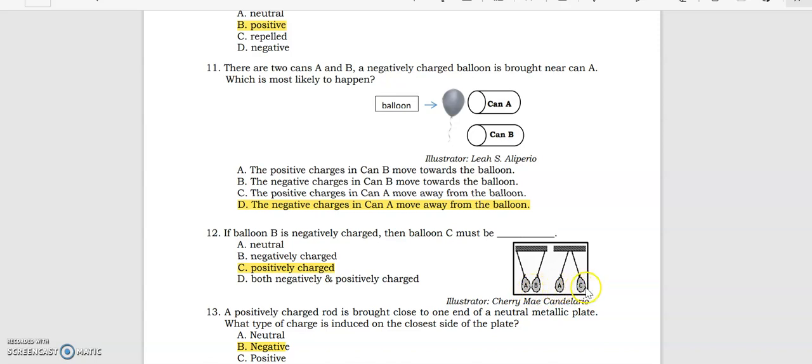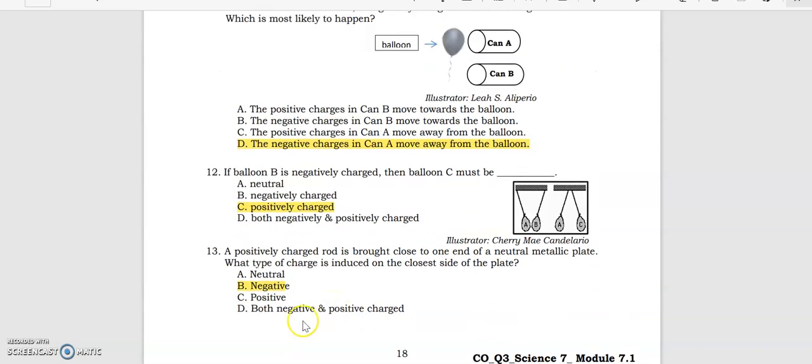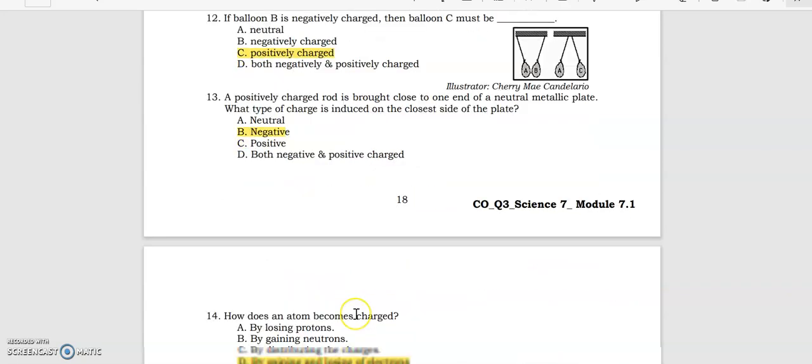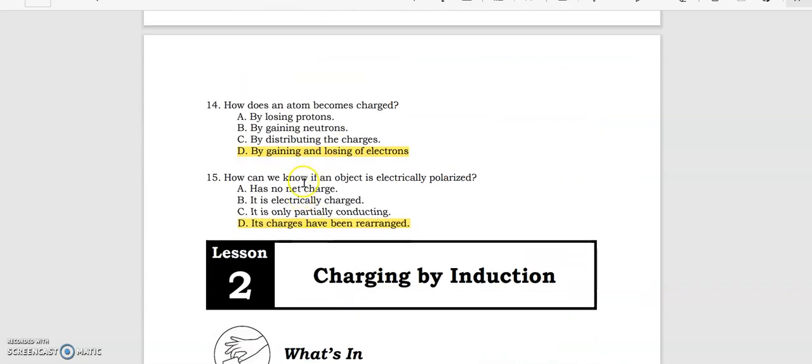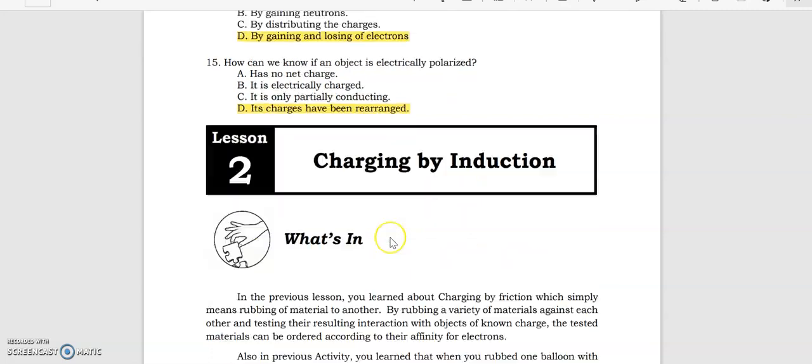A positively charged rod is brought close to one end of a neutral metallic plate. What type of charge is induced on the closest side of the plate? Negative. How does an atom become charged? By gaining and losing of electrons. How can we know if an object is electrically polarized? Its charges have been rearranged.